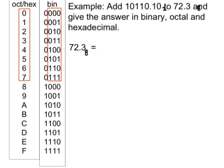So 72.3 base 8 is equal to: replacing each digit with its three-digit binary equivalent — seven is 111, two is 010. Putting in the fractional point, three is 011, base 2.